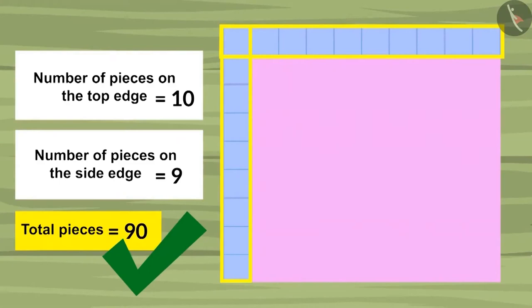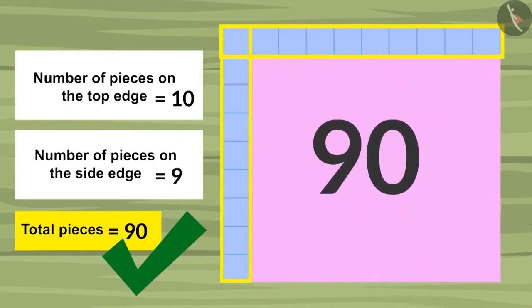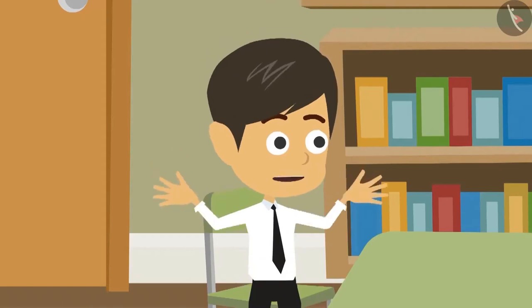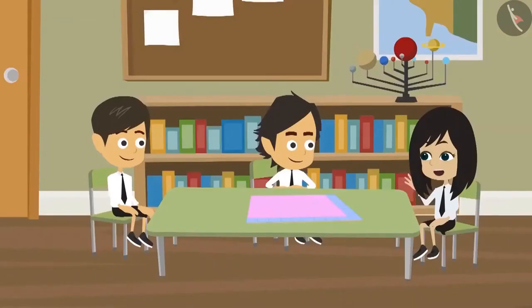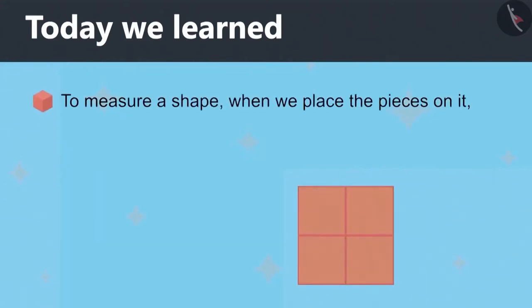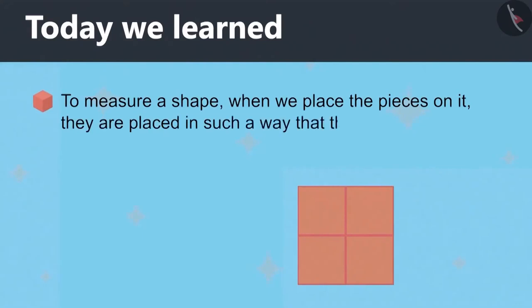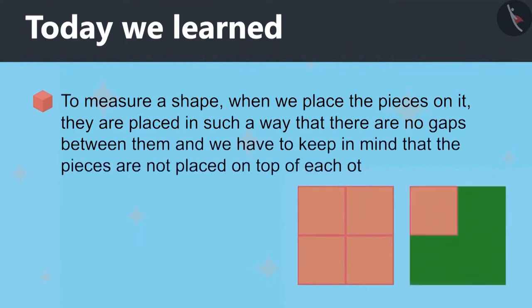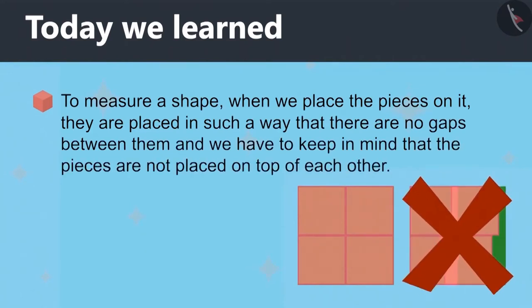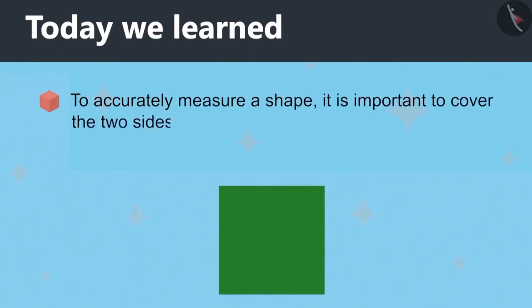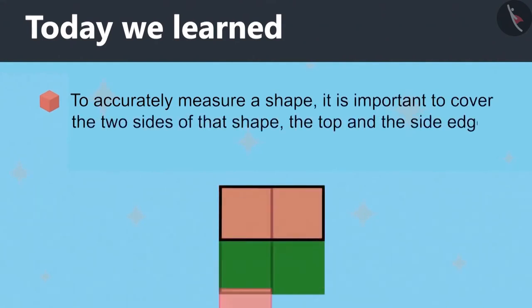So a total of ninety pieces will be required to cover this paper. Oh, now I get it. This method is much better. With this, any shape can be measured with fewer pieces. Today we learned that to measure a shape, when we place the pieces on it, there are no gaps between them and the pieces are not placed on top of each other. And to accurately measure a shape, it is important to cover the two sides of that shape: the top and the side edge.